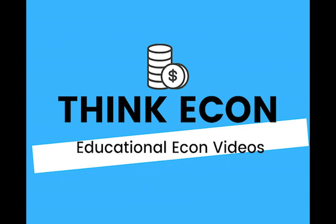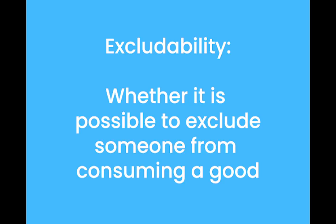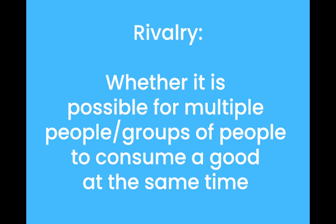Hey everyone and welcome back to our channel. Today we're going to talk about the four different types of goods. In economics, goods are usually classified according to two characteristics or attributes: excludability and rivalry or rivalrousness. Excludability describes whether or not it's possible to prevent somebody from consuming a good. Rivalrousness or rivalry describes whether multiple people or groups of people can consume the same good at the same time.